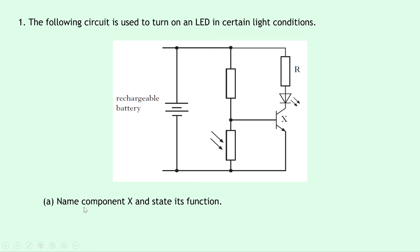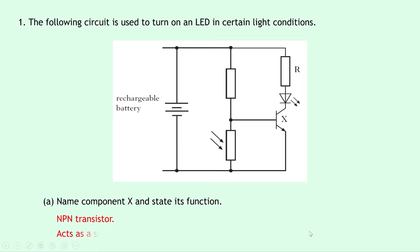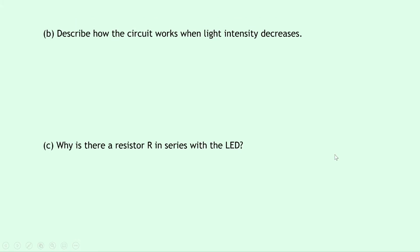Part A says name component X and state its function. Well, component X, because it's got an arrow that is not pointing in, is an NPN transistor, and its function is that it acts as a switch to turn the LED on or off.